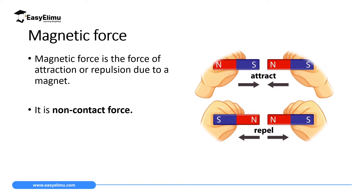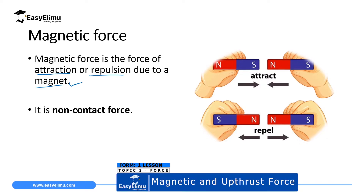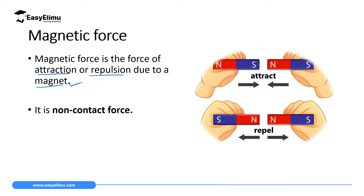Magnetic force is the force of attraction or repulsion due to a magnet. For you to have attraction or repulsion there must be a magnet. We will discuss magnetism as the first topic in Form Two. A magnet basically has two poles: a north pole and a south pole — on screen the north pole is written as N and south pole as S.